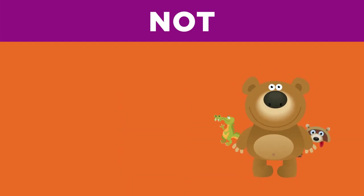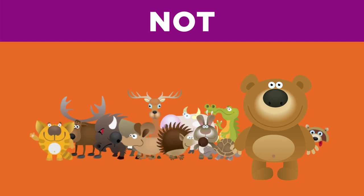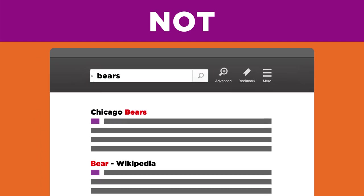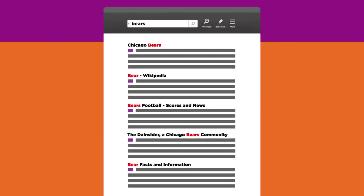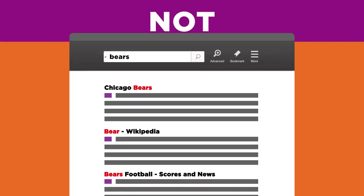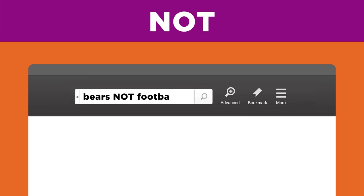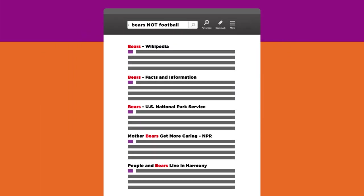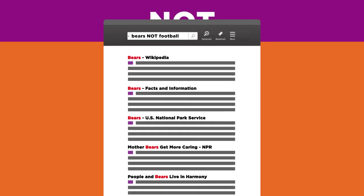Check out this example. Say everyone in your class is researching a different North American animal. When you search for BEARS, you're getting lots of results about the Chicago Bears football team. Using BEARS NOT football will focus your results by eliminating those about the football team. So NOT narrows your search by eliminating results you do NOT want.